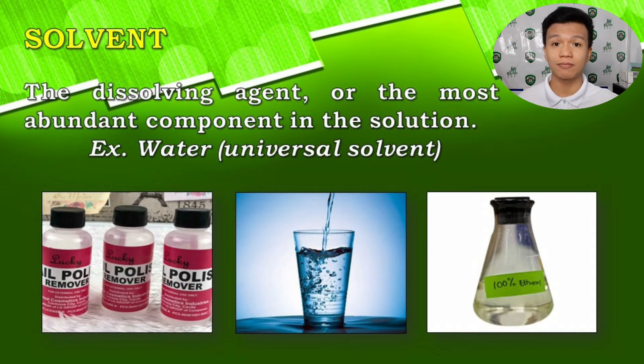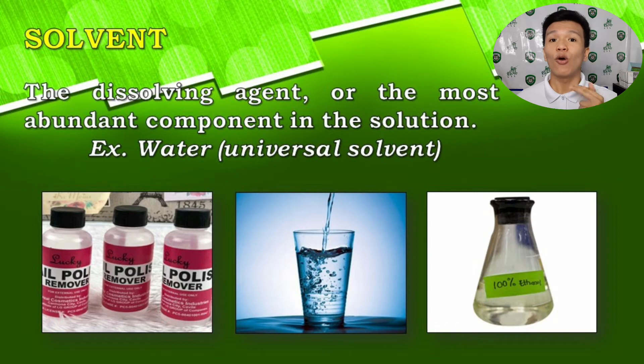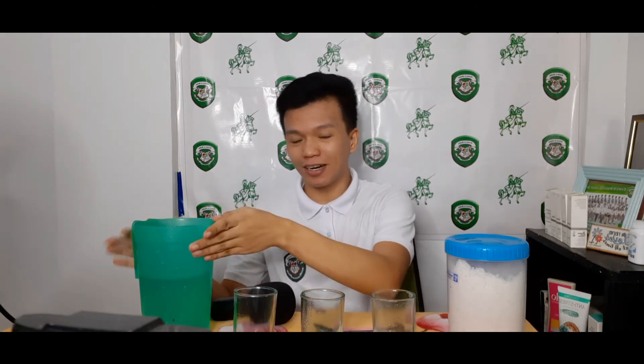Solutes are substances being dissolved in a solution, while a solvent is the dissolving agent — the substance that dissolves the solute. Solvents are also the most abundant component of a solution, meaning their amount is greater than that of the solute. One example is water, and take note — water is considered the universal solvent because it can dissolve various types of solutes.